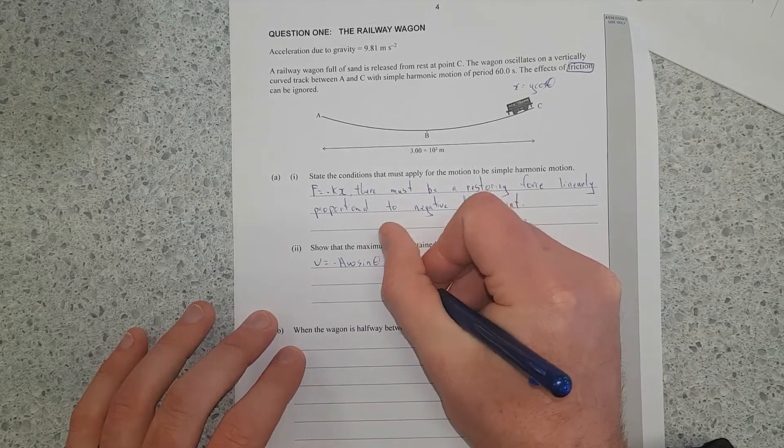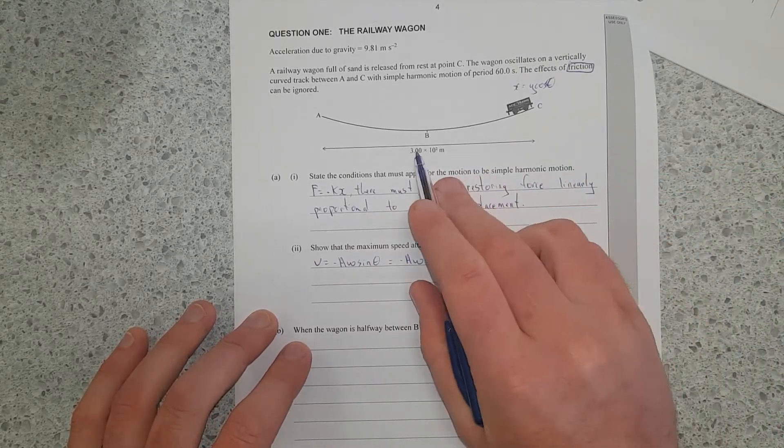The differential of that is going to be V is equal to negative A omega sine theta. And the maximum sine theta can be is 1, so it's just equal to negative A omega, which is equal to negative - what's my amplitude? Amplitude is half of 300 metres, so it's 150 metres, times omega, which is just 2 pi f, so 2 pi times 1 over 60.